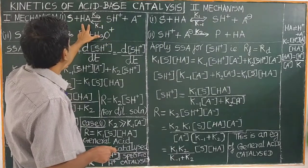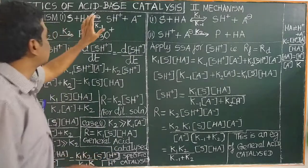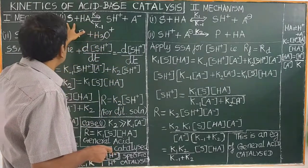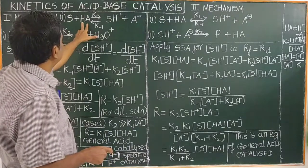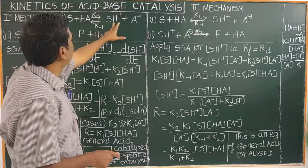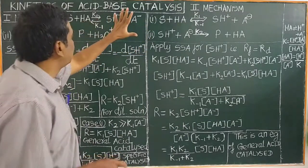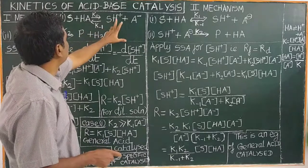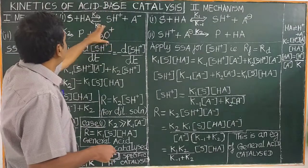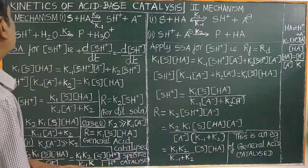In the first mechanism, the acid H-A transfers a proton to the substrate S, to form SH+ and A-. This is a reversible reaction. The forward reaction rate constant is K1, and the reverse reaction rate constant is K-1.